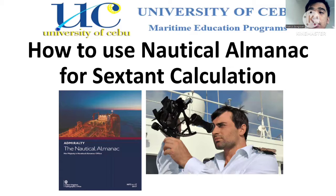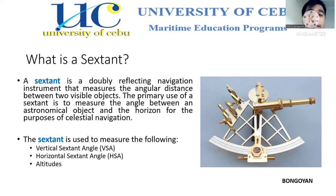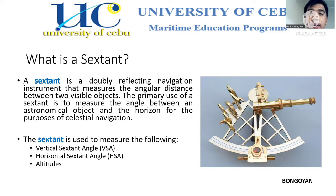How to use the nautical almanac for sextant calculation. What is a sextant? A sextant is a doubly reflecting navigation instrument that measures the angular distance between two visible objects. The primary use of a sextant is to measure the angle between an astronomical object and the horizon for the purpose of celestial navigation.